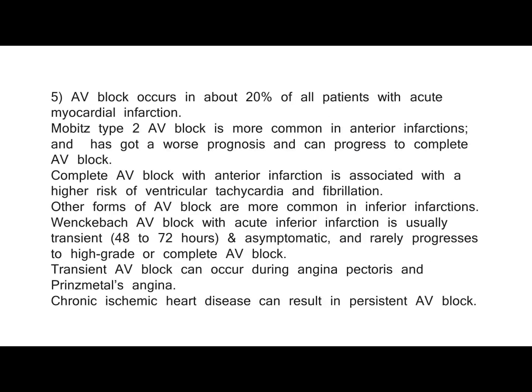AV block occurs in about 20% of all patients with acute myocardial infarction. Mobitz Type 2 AV block is more common in anterior infarctions, has a worse prognosis, and can progress to complete AV block. Complete AV block with anterior infarction is associated with a higher risk of ventricular tachycardia and fibrillation. Other forms of AV block are more common in inferior infarctions. Wenckebach AV block with acute inferior infarction is usually transient (48–72 hours), asymptomatic, and rarely progresses to high-grade or complete AV block. Transient AV block can occur during angina pectoris and Prinzmetal's angina. Chronic ischemic heart disease can result in persistent AV block.